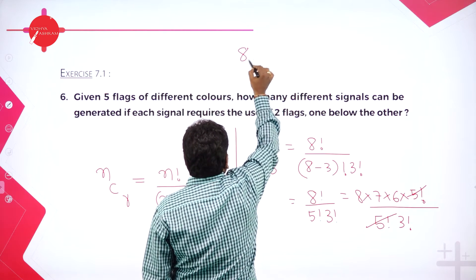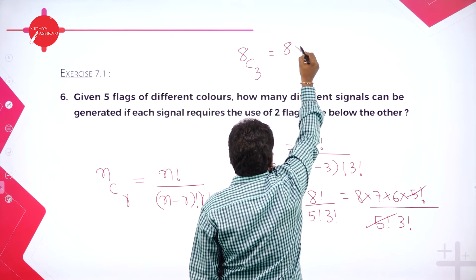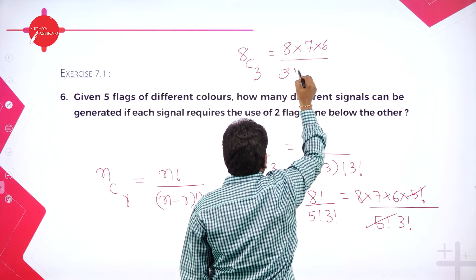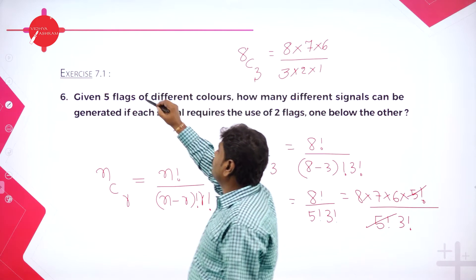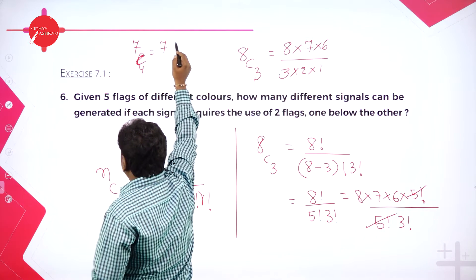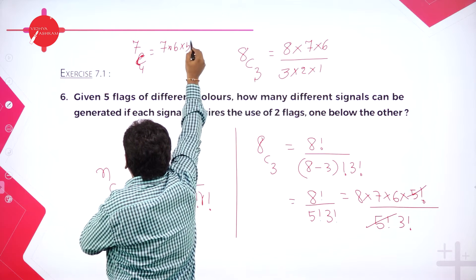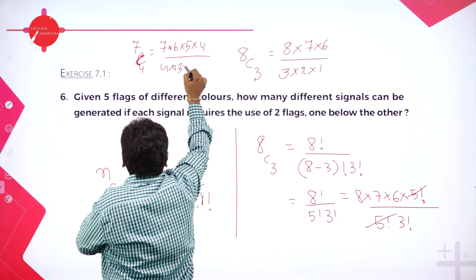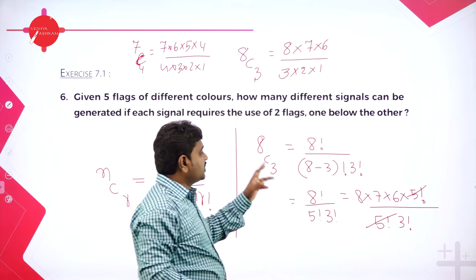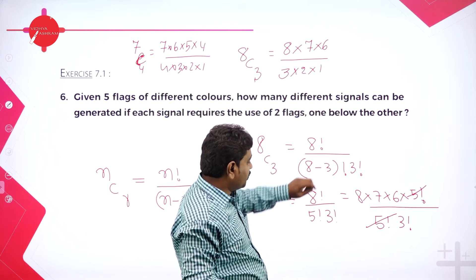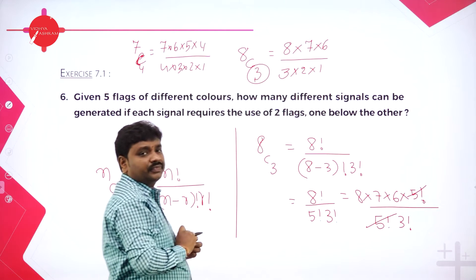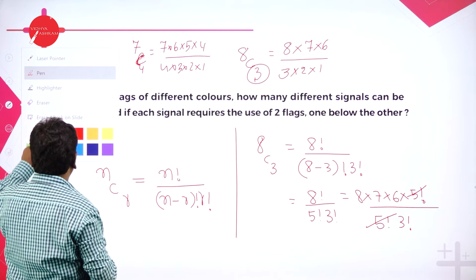The shortcut for NCR: for 8C3, start from 8, take 3 terms in the numerator — 8, 7, 6 — then the denominator is 3 factorial, which is 3 into 2 into 1. For 7C4, numerator starts from 7 and takes 4 terms: 7, 6, 5, 4; denominator is 4 factorial. So NCR means N factorial divided by (N minus R) factorial into R factorial — from N take R terms in the numerator, R factorial in the denominator.